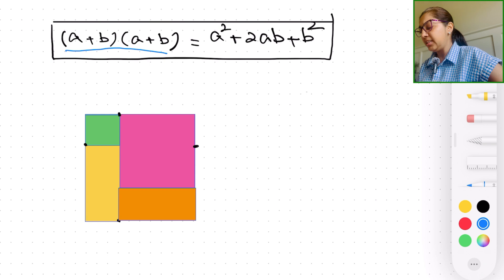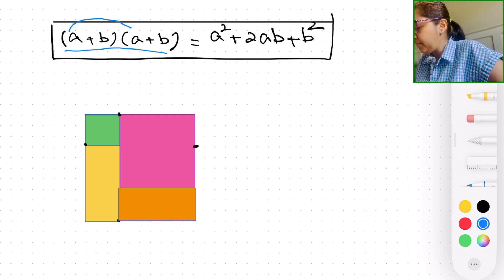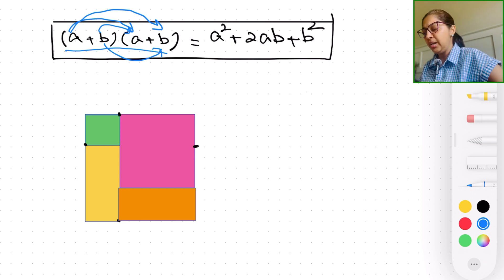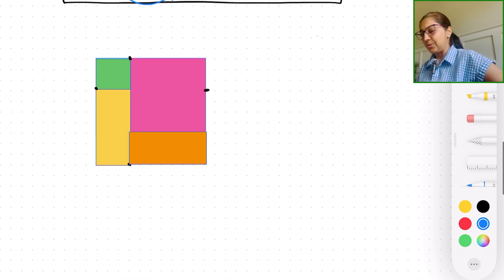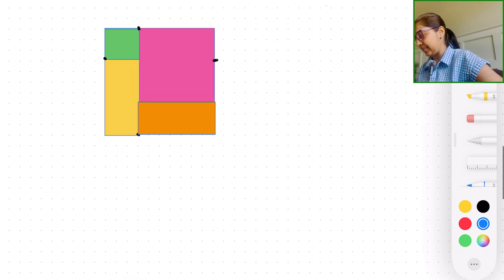So usually what we do is foil this like we go a times a, then we go a times b, b times a again and b times b and come up with the expansion which results in a squared plus 2ab plus b squared. Now this is also a formula oftentimes utilized in polynomial factorizing but what I'm talking about is a jigsaw puzzle. So let's go ahead and see what this is about.